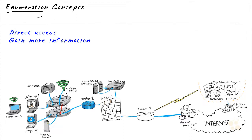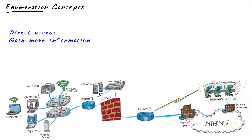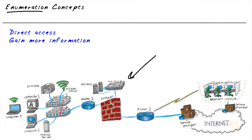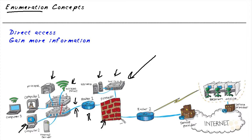We're getting more information that we can use to further compromise the system. A question might be: what are the devices on the network that can give us additional information? And the answer is almost every device. The hosts, printers, access points, servers, switches, routers, and firewalls all have the potential to give us additional information.